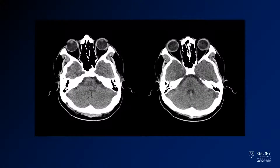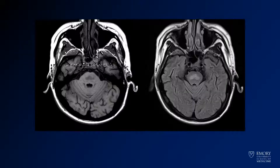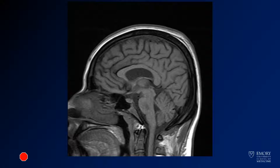Here we have some CT images through the level of the pons. If you're thinking that's relatively normal, that's okay. Here we have some MR images through the same region — T1 on the left and FLAIR on the right. Here we have a sagittal T1 image through the same region.